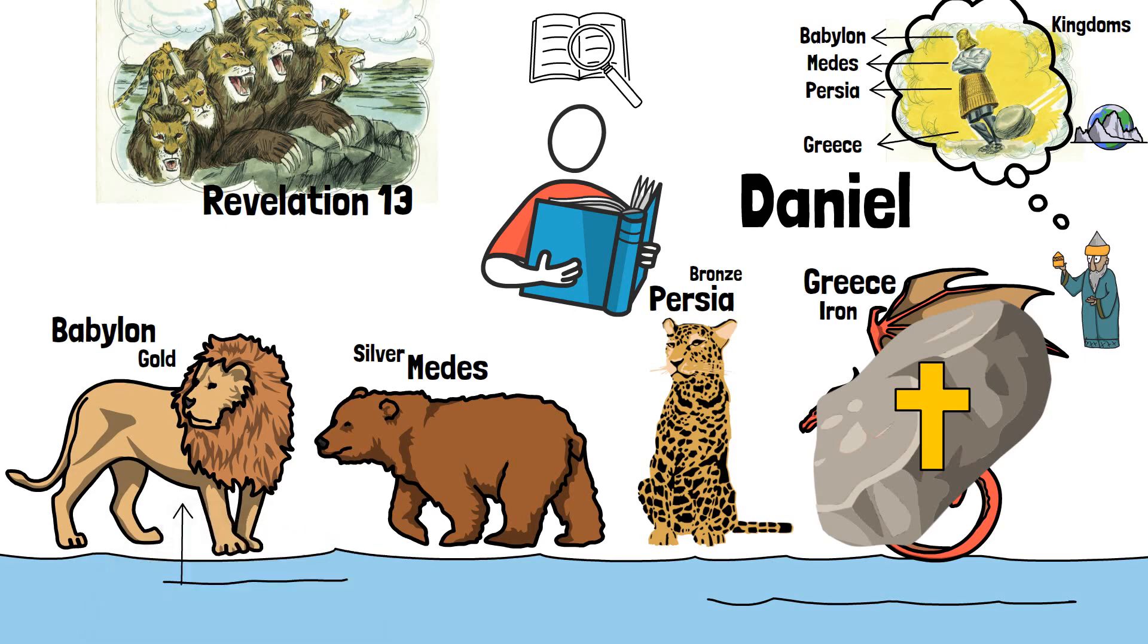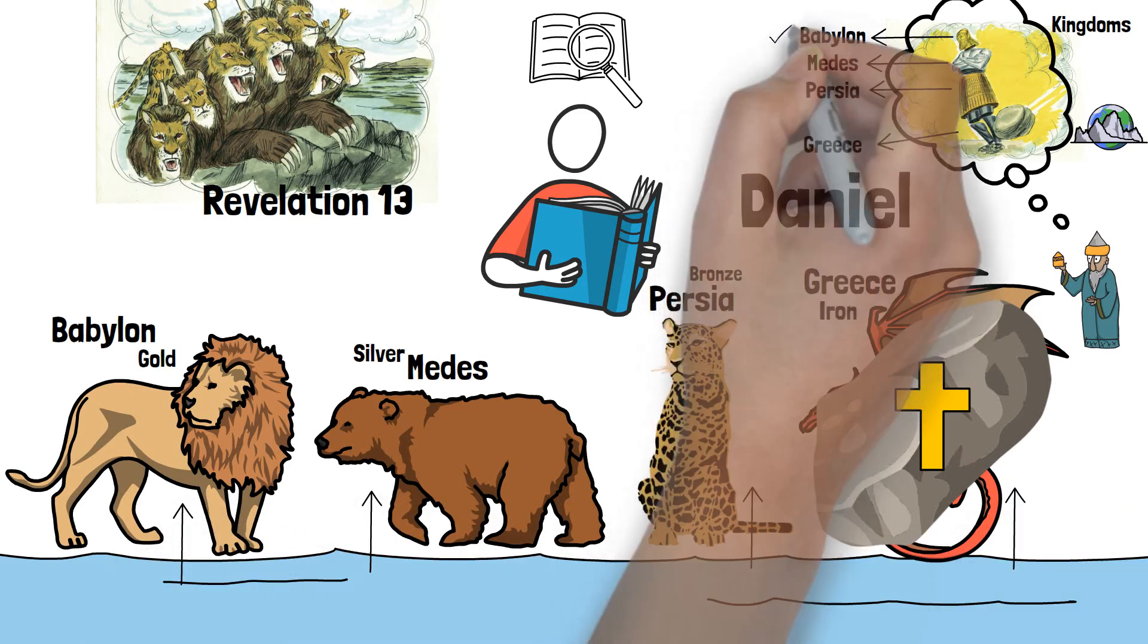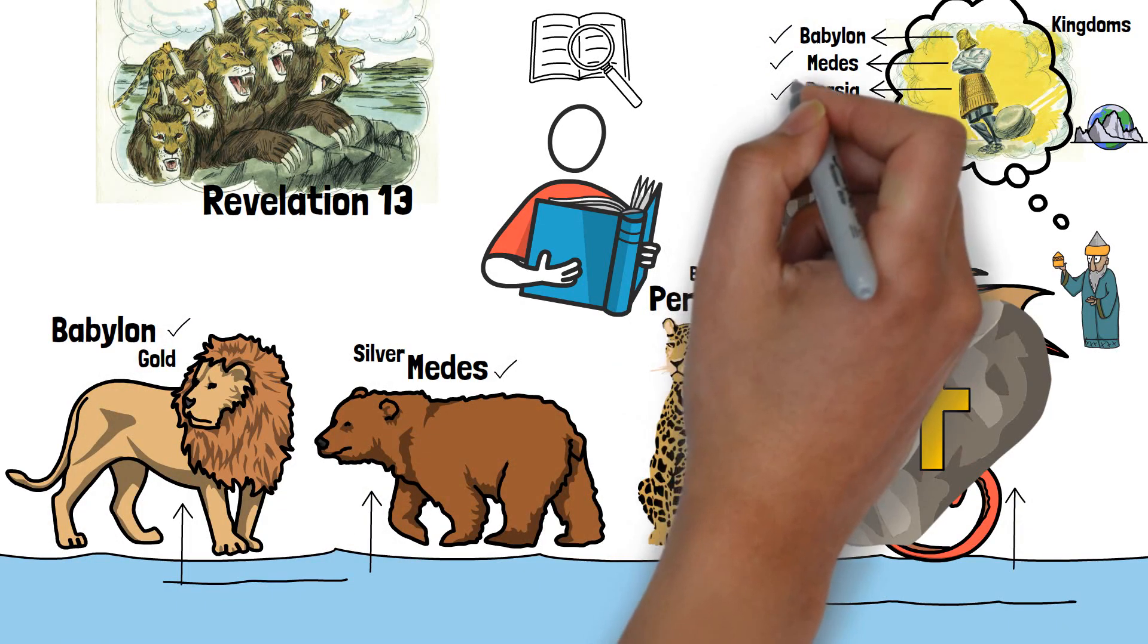These same aspects are also represented in the four beasts that arise from the sea, with the lion representing Babylon, the bear the Medes, the leopard the Persians, and the fourth beast is Greece.